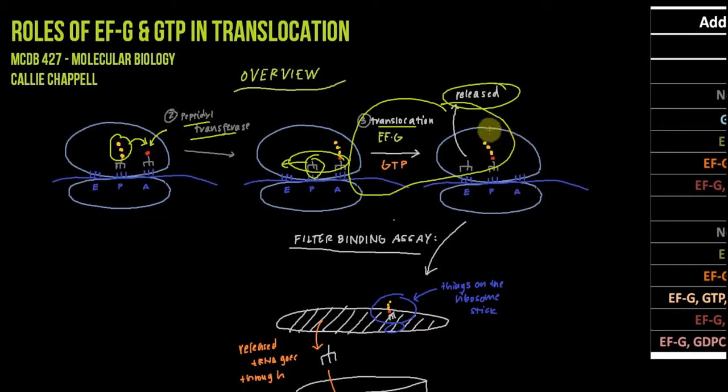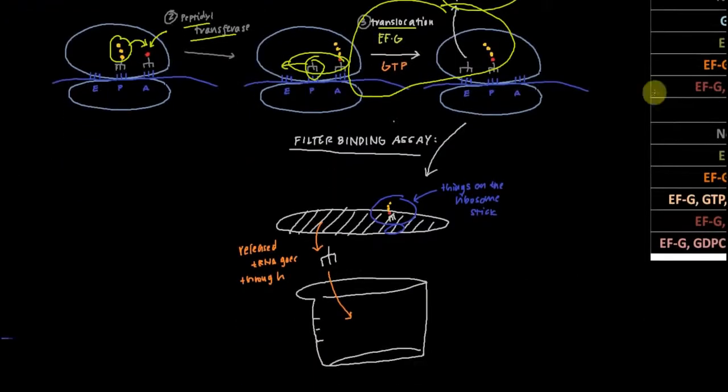Remember that normally this tRNA would be in the e-site, but because this is done in vitro, it binds loosely and functionally gets released. They do a filter binding assay. In filter binding assays, proteins stick to the filter and other things don't. When they do the filter binding experiment, the ribosome and anything on it, like the tRNA with its polypeptide, stays on the filter. Anything not on the ribosome anymore, like this released tRNA from the e-site, goes right through. They can collect and measure the free deacetylated tRNA.